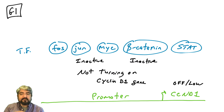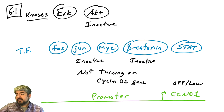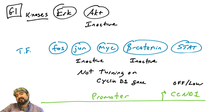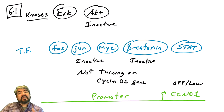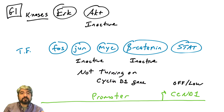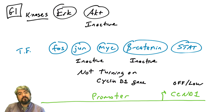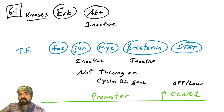What controls these transcription factors? We're going to talk about kinases that regulate them. We've covered in previous videos the RAS-RAF-MEK-ERK pathway and the PI3 kinase-AKT pathway. In most cells that are in G1, these two kinases, ERK and AKT, are not active, so they are not phosphorylating their substrates, and that leads to these transcription factors being in an inactive state.